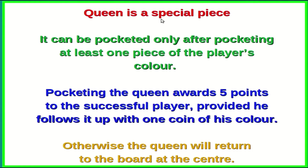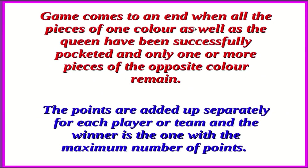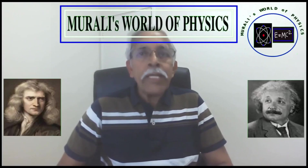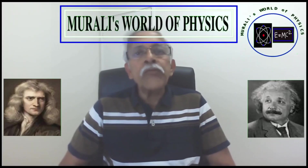The Queen is a very special piece in the game. It can be pocketed only after pocketing at least one piece of the player's color. Pocketing the Queen awards 5 points to the successful player, provided he follows it up with one coin of his own color. If he is not successful in following up, the Queen returns to the board at the center. The game ends when all pieces of one color as well as the Queen have been successfully pocketed and only pieces of the opposite color remain. Points are then added up and the winner is the one with the maximum number of points.